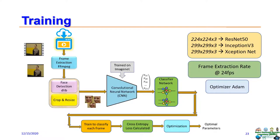During training, we extracted frames using FFmpeg software at a frame extraction rate of 24 frames per second. We detected faces from the frames using the dlib package. Faces were then cropped and resized according to the input requirements of each CNN. Once the feature maps were extracted from the CNNs, the classifier network was trained to classify each frame. We calculated the cross-entropy loss and used the Adam optimizer. This gave us three different trained models with optimal parameters for the three CNNs.